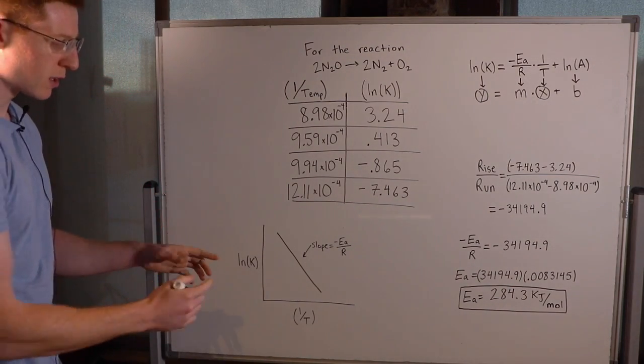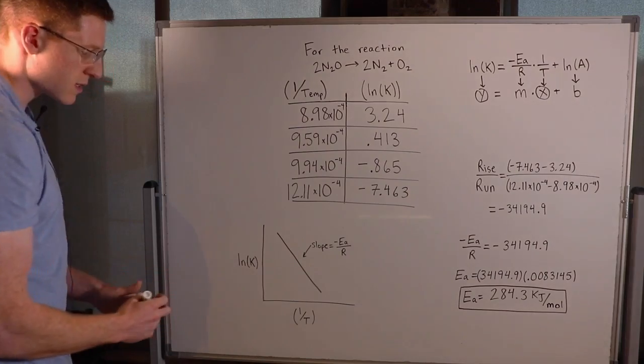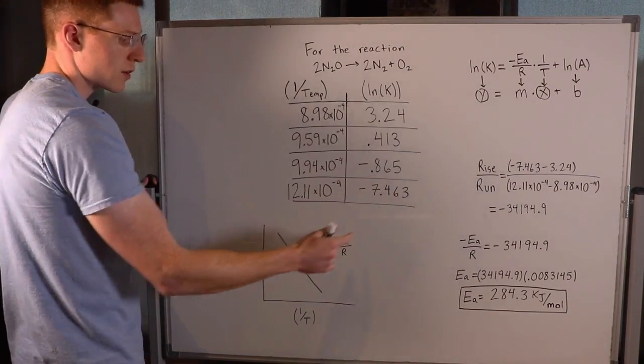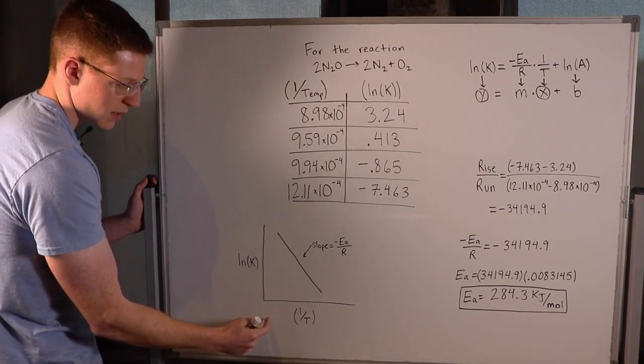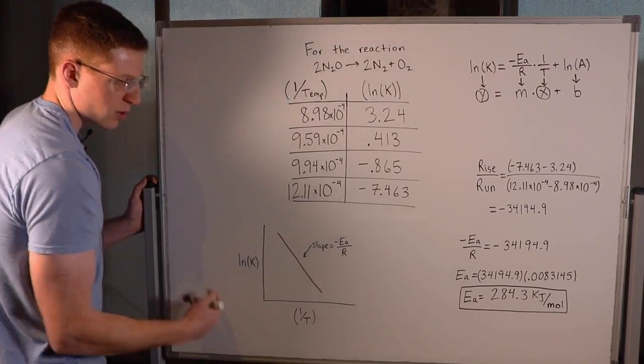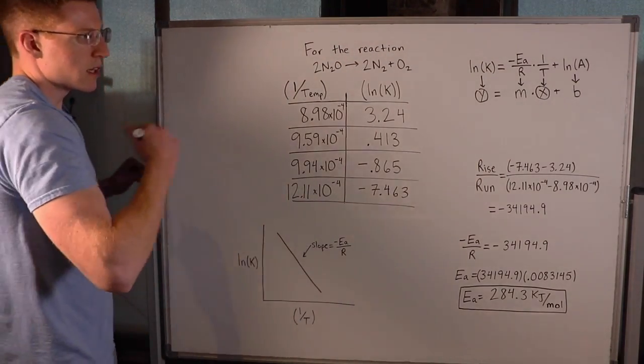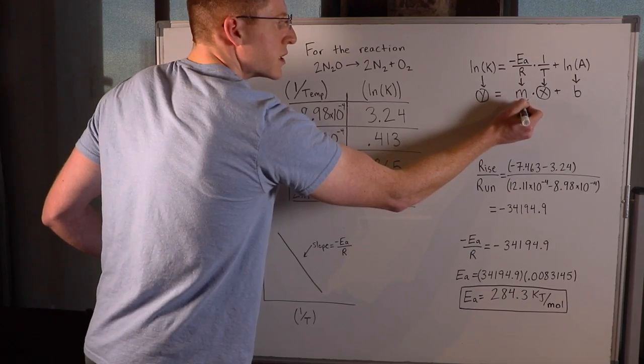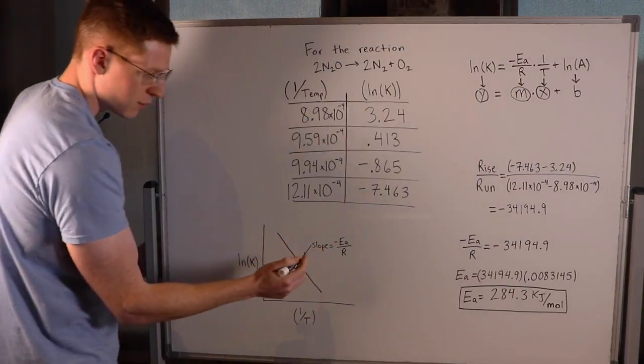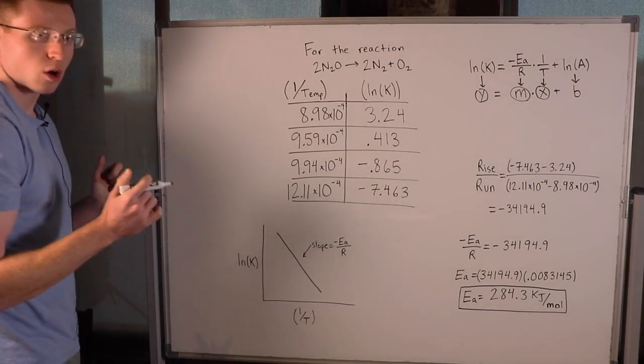It's a crude graph without precise points, but you can see ln(k) on the y-axis and 1/T on the x-axis. The slope m is always going to be -Ea/R.